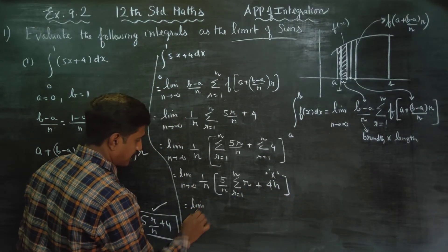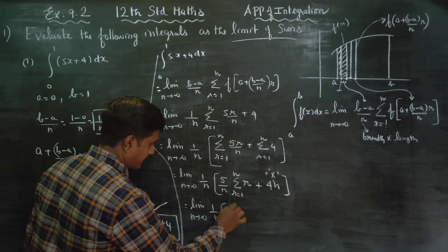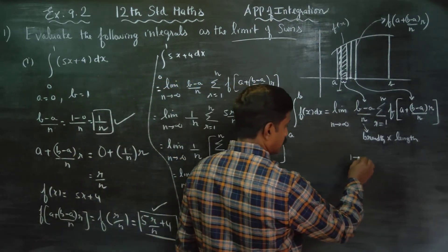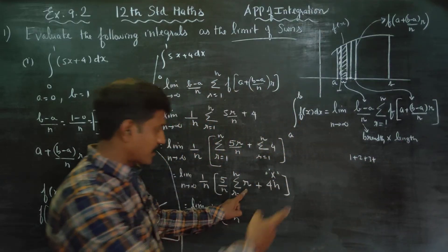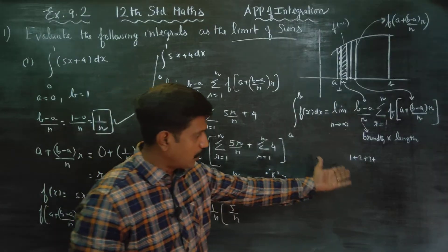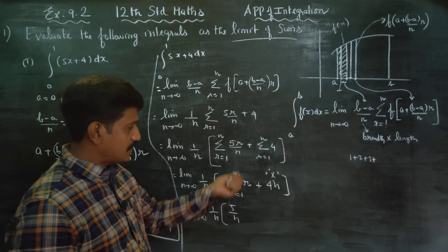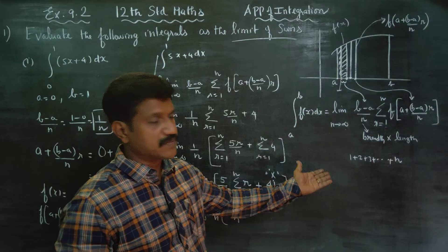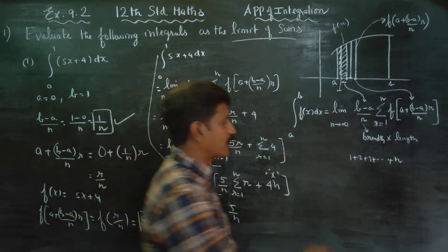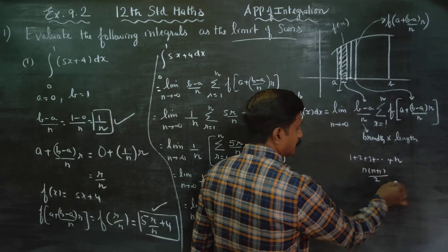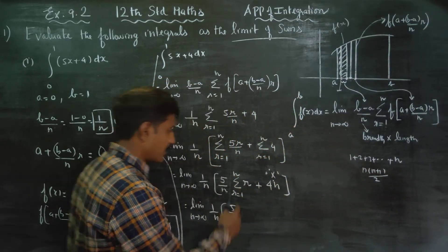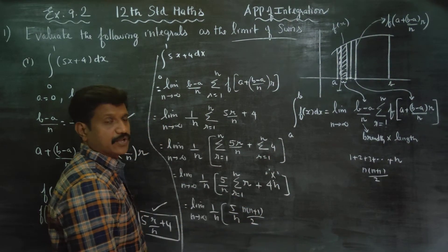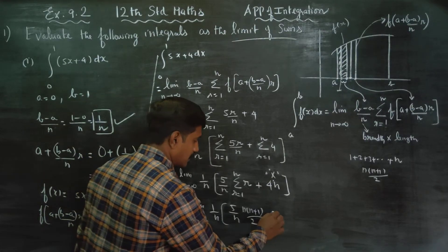Limit n turns to infinity: (1/n) times [5/n times sigma r from 1 to n of r, plus 4n]. The sum 1 plus 2 plus 3 up to n uses the natural numbers formula: sigma r equals n(n+1)/2. Substituting: (5/n) times n(n+1)/2 plus 4n.